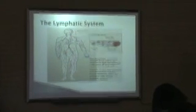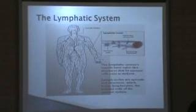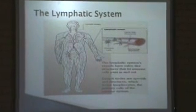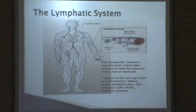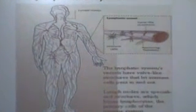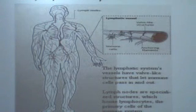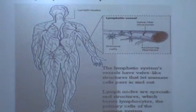As noted here, the lymphatic system vessels have valve-like structures that let immune cells tap in and out. So we're training soldiers here and also letting them go, so they can travel throughout the body and pick up any foreign substances or anything that's going to cause infections to your system.